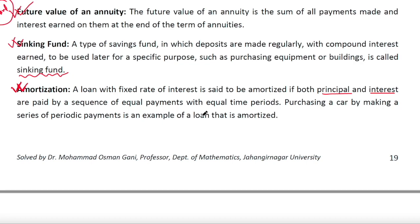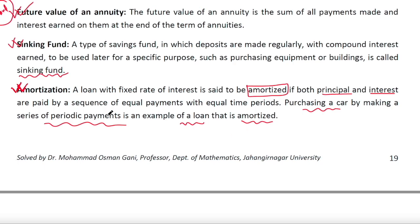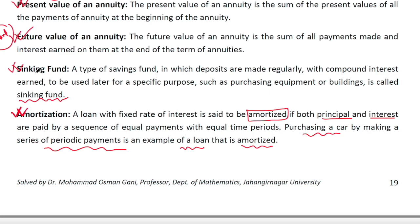Amortization is the way of paying your loan — it is the process by which we pay both the principal and interest of a loan. For example, if you pay the principal and interest of your loan, the loan is said to be amortized. Purchasing a car by making a series of periodic payments is an example of a loan that is amortized. Sinking fund is creating a fund for the future; amortization is the process of paying off a loan.